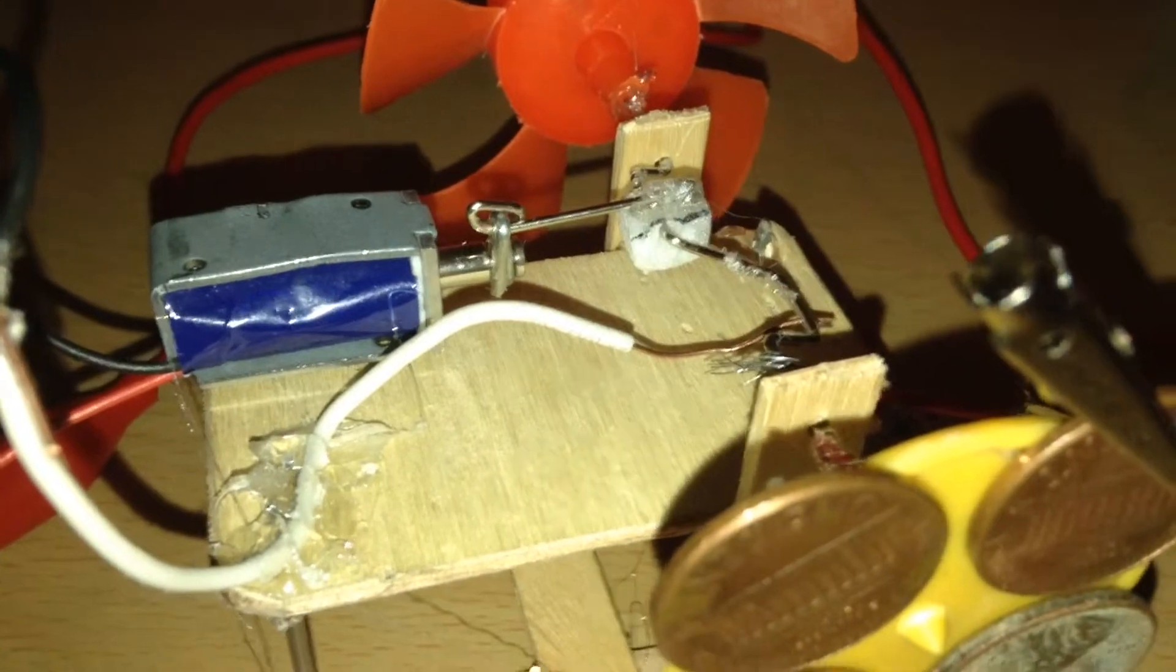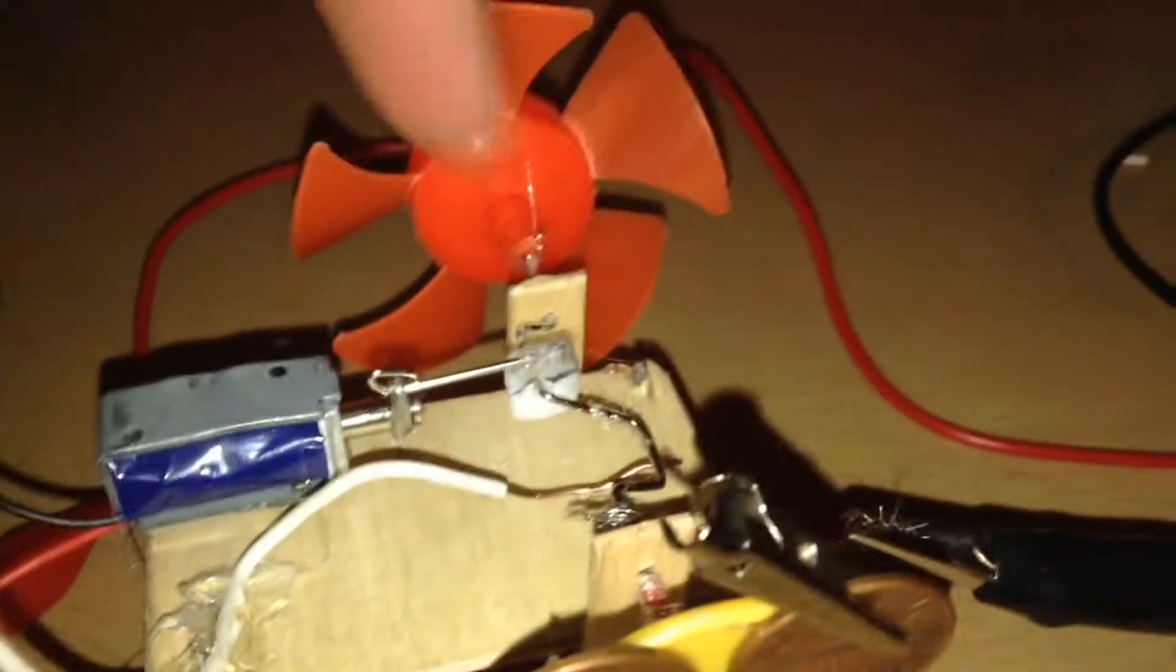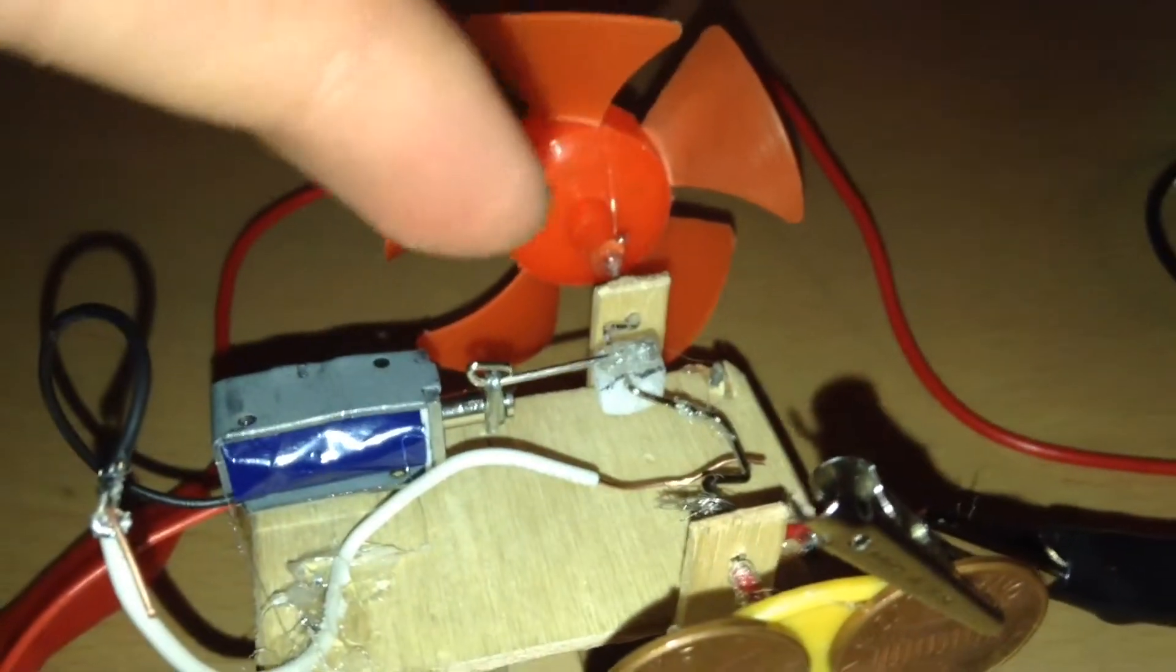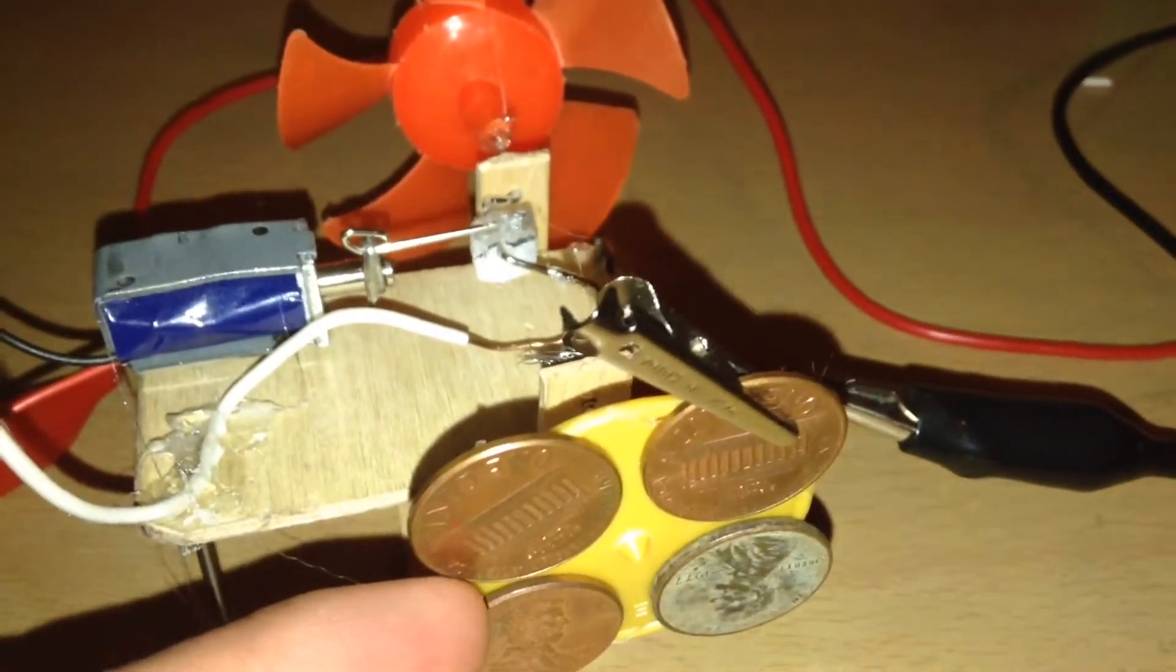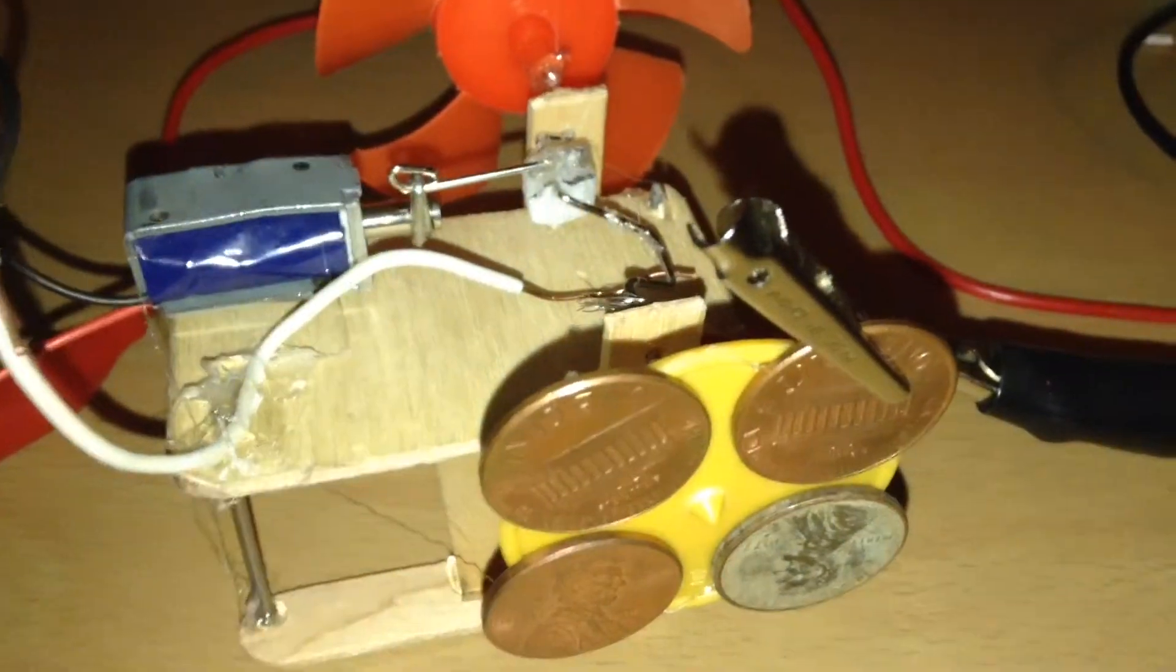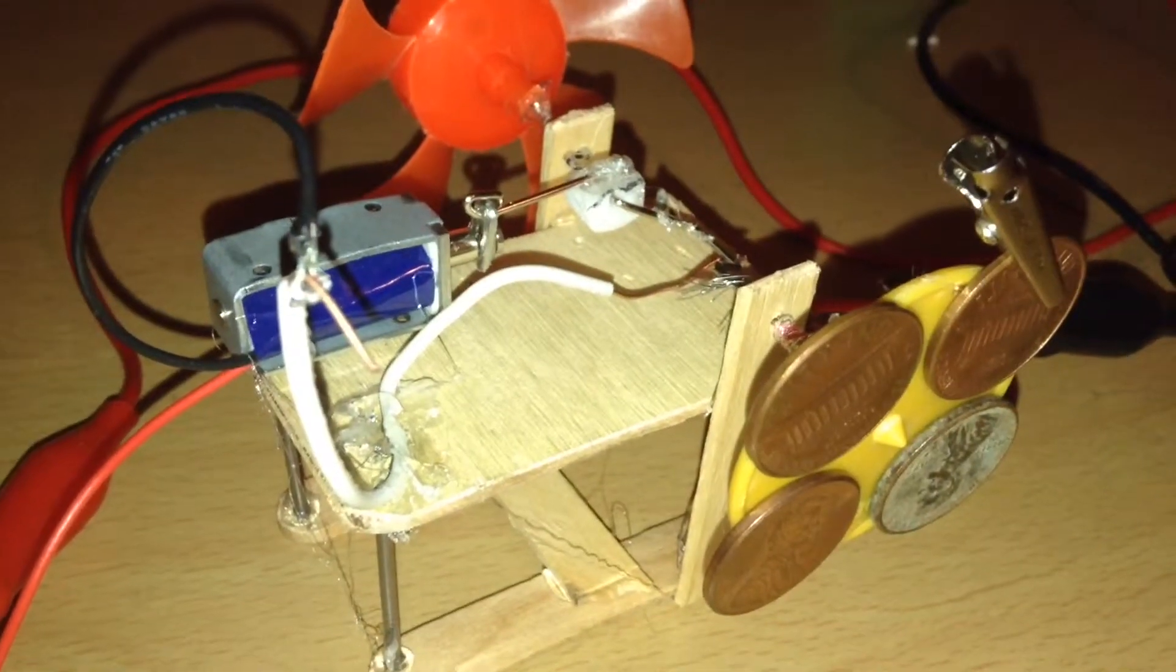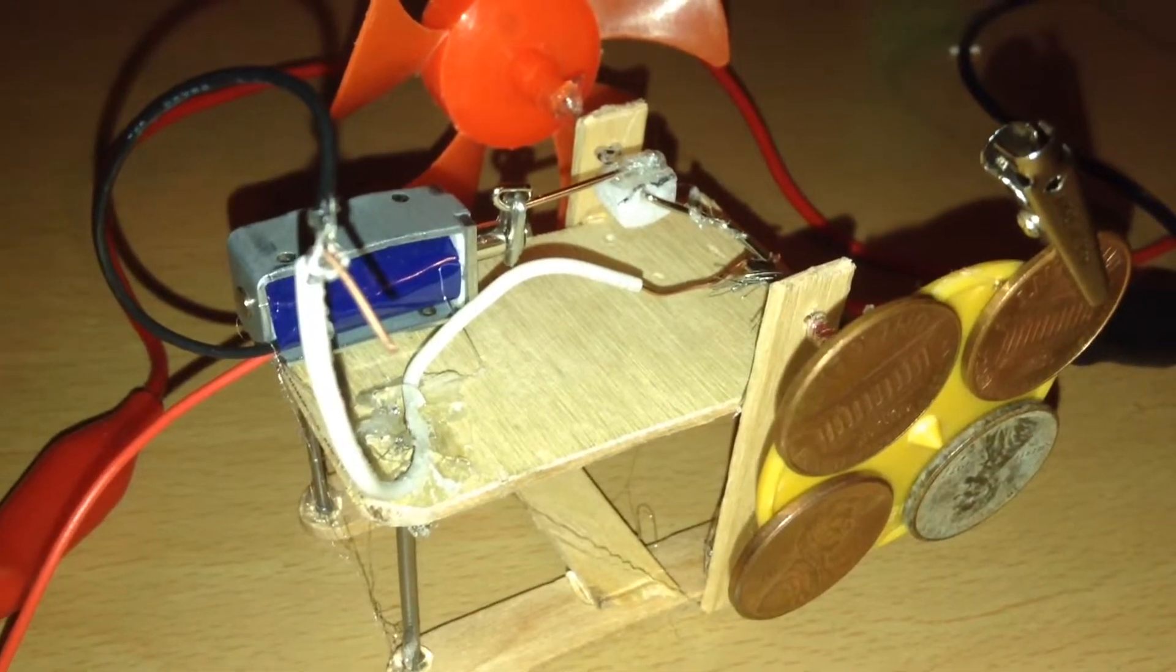So this solenoid engine consists of this electromagnetic solenoid that I scrapped from an old printer, a few bent paper clips, a fan, and my flywheel that I made out of an old top, a few pennies, and an alligator clip. It is on a frame made of wood, popsicle sticks, and nails.